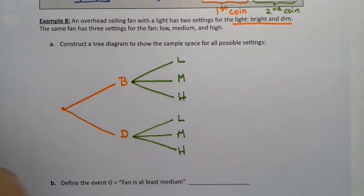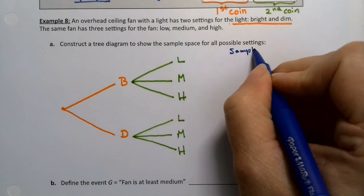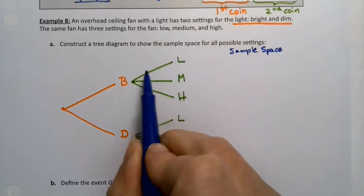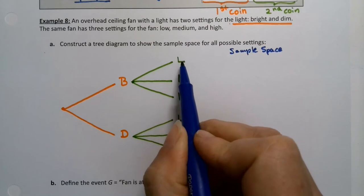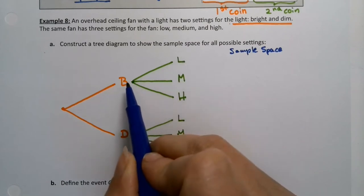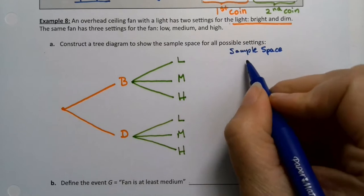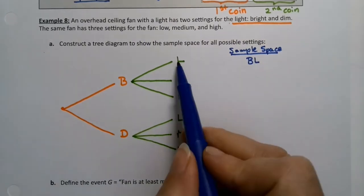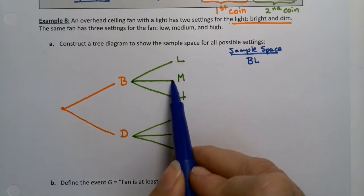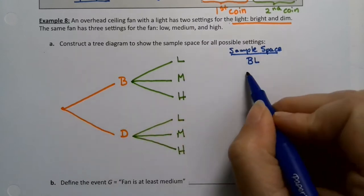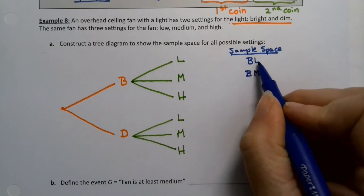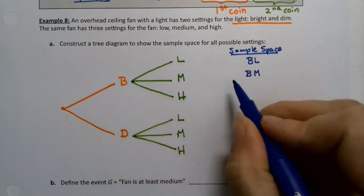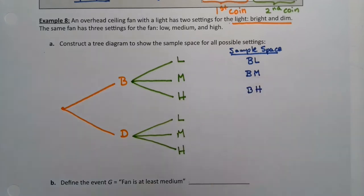Now I have to list the sample space. Each of these items at the end traces back and gives you a spot. So this will be an L in the second position and a B in the first position. So it goes B, L. That's where the L comes from. Now this M came from that B. So bright, medium. So bright, low. Bright, medium. Bright, high.